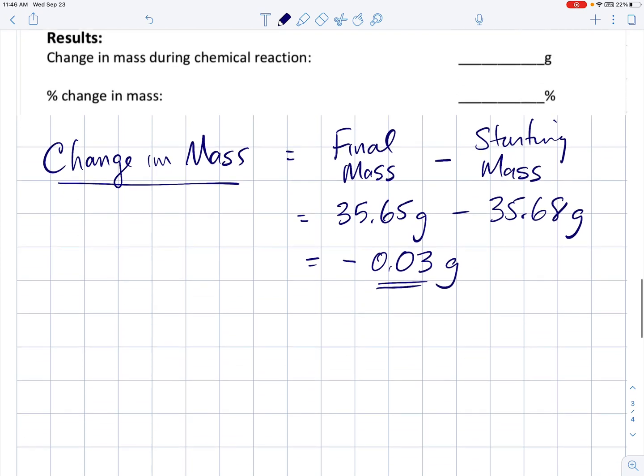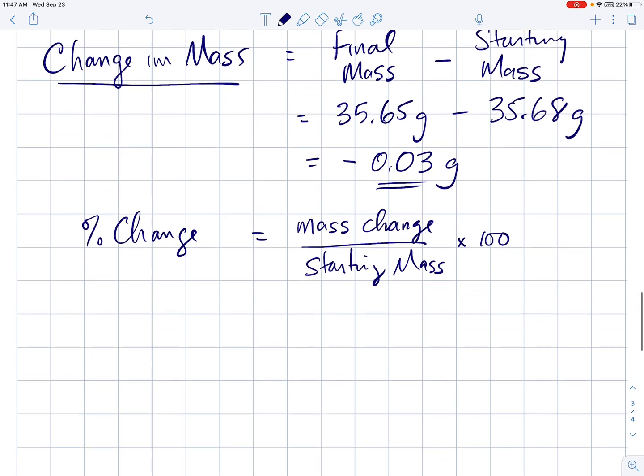But then we want to also find the percent change in mass. So let's do that. To do that, you take your mass change, what we just calculated a moment ago, and you divide that by the starting mass. And to get percent, you times by 100. So in this example, the mass change was negative 0.03 grams divided by the starting mass, which was 35.68 grams, and we times by 100. Notice that the grams are going to cancel out. So the percent change will not have any units with it. So negative 0.03 divided by 35.68 times by 100.